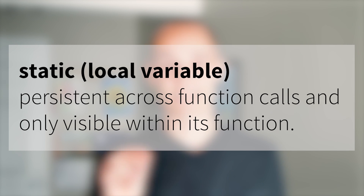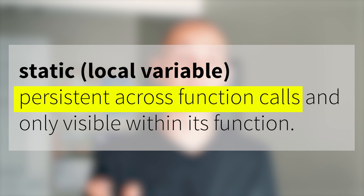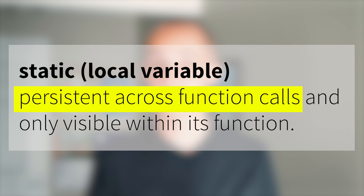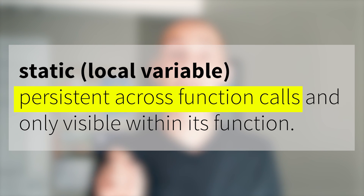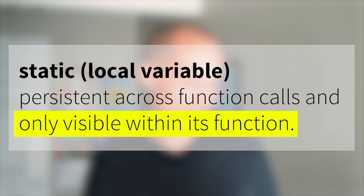When used with a local variable, things get a little bit weird. A static local is persistent, like a global, meaning that it will persist over multiple function calls. You can call this function over and over again, and this variable sticks around — it doesn't get erased, it doesn't get reinitialized. Like global variables and functions, making a local variable static means that that variable is only visible within that function. So it's kind of like a global variable that nobody can see outside of that function.